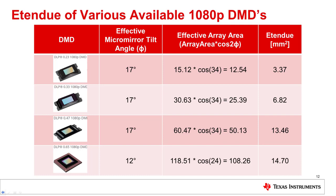The illumination cone angle is dictated by the effective tilt of the micromirrors, because it is not desirable to capture flat-state or off-state light in the on-state projection pupil. The area of the DMD is fixed by the native pixel pitch and resolution, and is adjusted with a cosine factor due to the obliquity caused by the required tilted illumination. Finally, the etendu is calculated using the equation described previously.